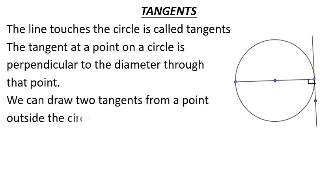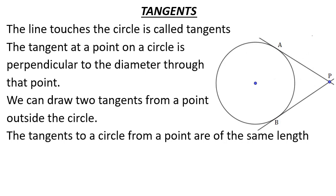We can draw two tangents from a point outside the circle. The tangents to a circle from an external point are of the same length.